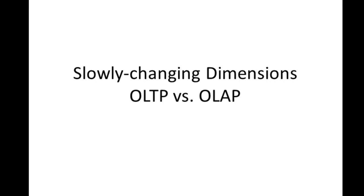In other videos, we've taken a look at some of the differences between OLAP and OLTP. For instance, demonstrating that OLAP works well with second normal form, while OLTP is best at least up to 3NF, or third normal form. In this video, we're going to compare OLAP and OLTP in another way by talking about slowly changing dimensions.